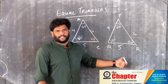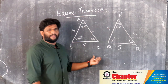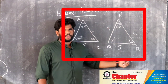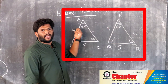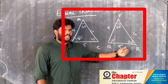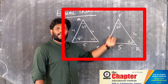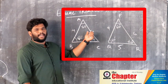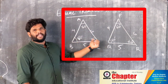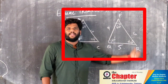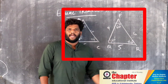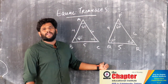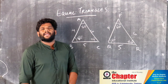I will tell you about two triangles: triangle ABC and triangle PQR. Triangle ABC has sides 4, 5 and triangle PQR has sides 4, 5. If you see the angles, they are 60, 80, 40 degrees. This is also 60, 80, 40 degrees. These are the first two triangles. In this triangle, three angles are equal.